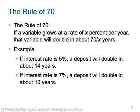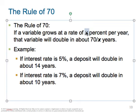Here's the rule of 70: if a variable grows at a rate of X percent per year, that variable will double in about 70 divided by X years. It's a rule of thumb that has come about over years of research in finance. For example, if the interest rate is 5%, a deposit will double in 70 divided by 5, which is 14 years.